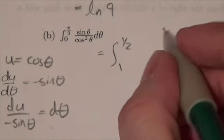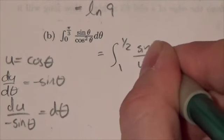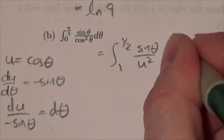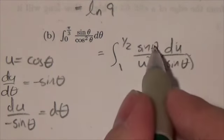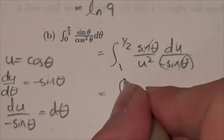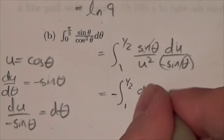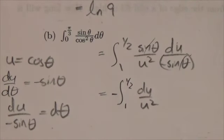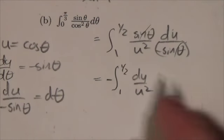So this is going to end up being sine of theta over u squared. And this will end up being du over negative sine theta. And I'll put that in brackets. So the sine theta is cancelled. And we end up with the integral. And I'll pull the negative out front. The integral of du over u squared from 1 to 1 half.